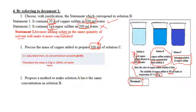Propose a method to make solution A have the same concentration as B. Look at A and B - B has this quantity with darker color.